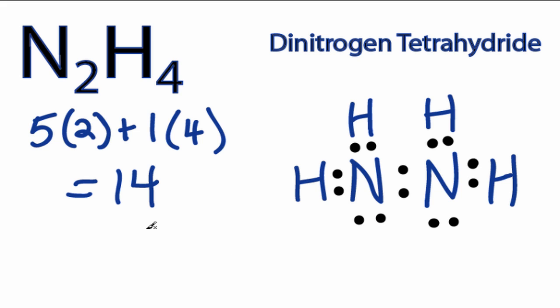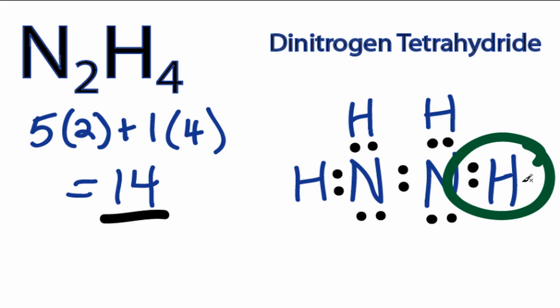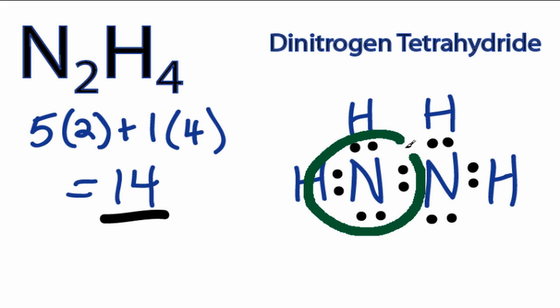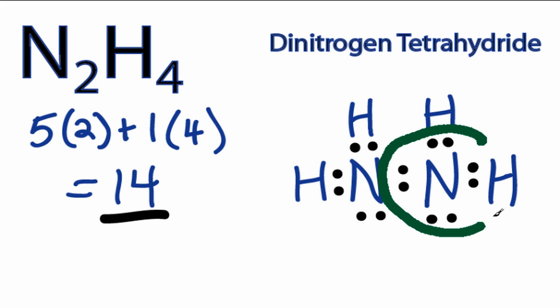So let's check our octets now that we've used all of the 14 valence electrons we started with. All of the Hydrogens have 2 valence electrons. Hydrogen only needs 2 for a full outer shell, so all of our Hydrogens are OK. The Nitrogens have 8 valence electrons, so their outer shells are full.